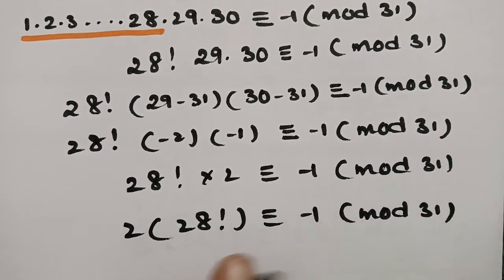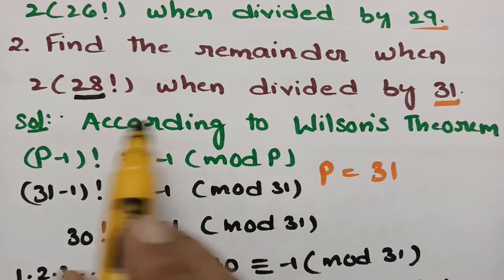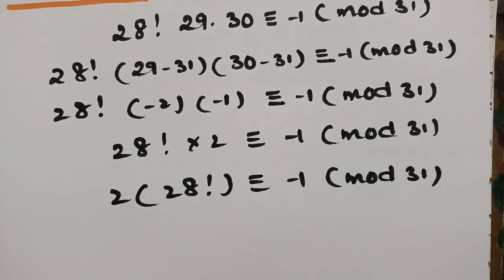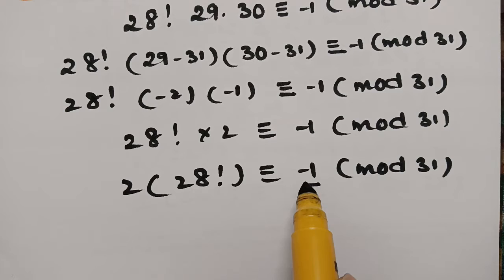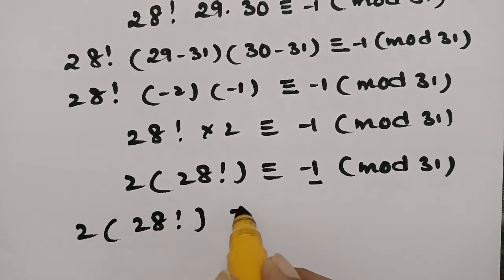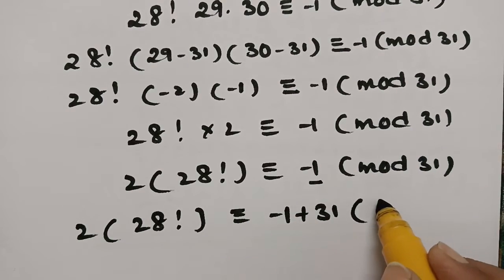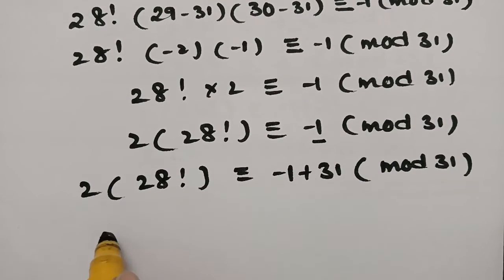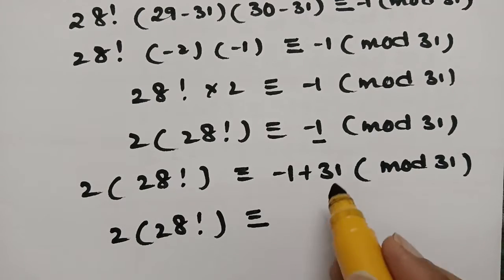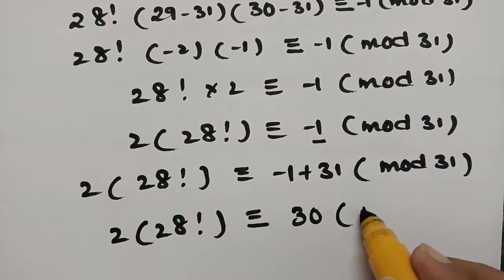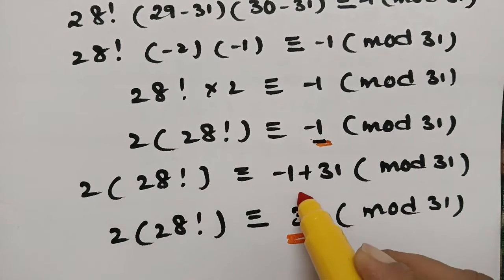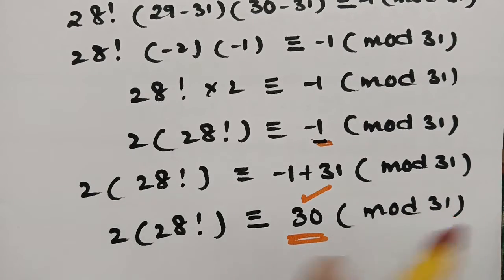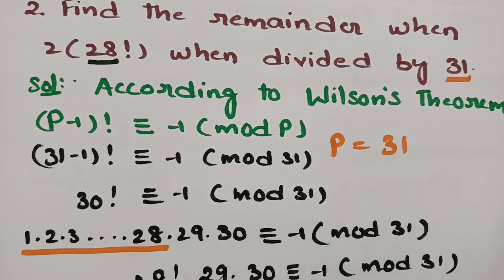Now transforming: when 29 is divided by 31, the remainder is 29 − 31 = −2; when 30 is divided by 31, the remainder is 30 − 31 = −1. So 28! × (−2) × (−1) = 2 × 28! ≡ −1 (mod 31). Since this is negative, we add 31: −1 + 31 = 30. Therefore 2 × 28! ≡ 30 (mod 31), and the remainder is 30.